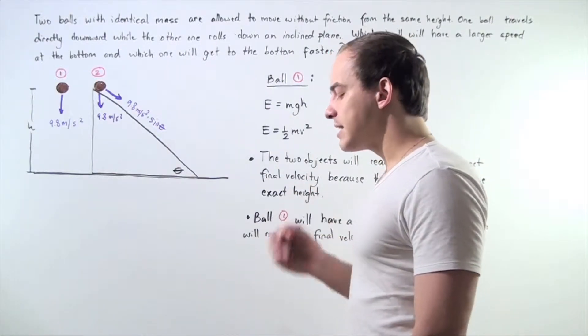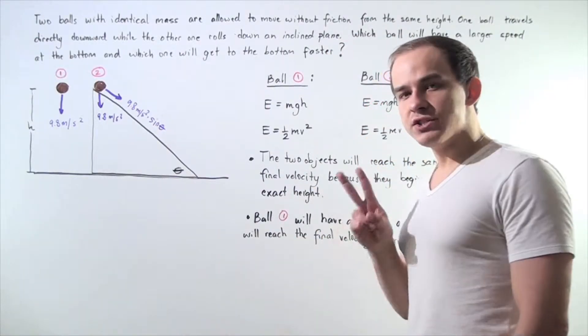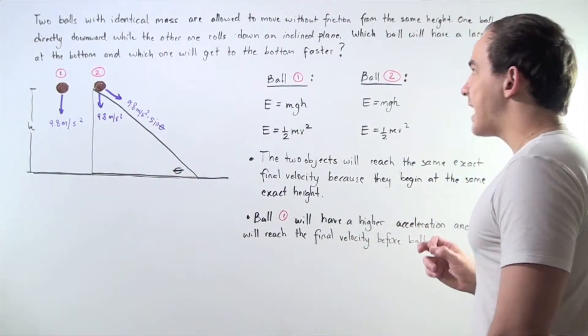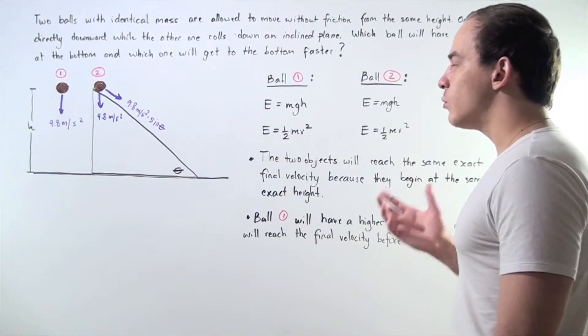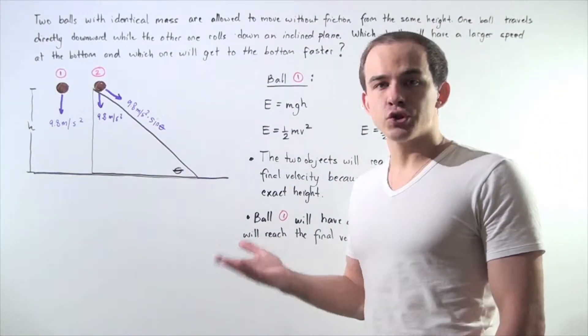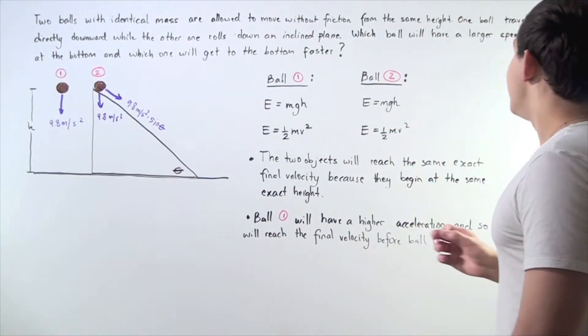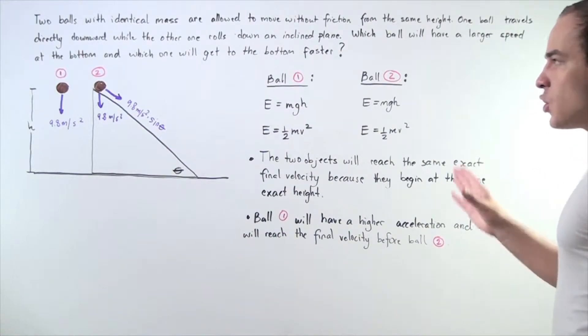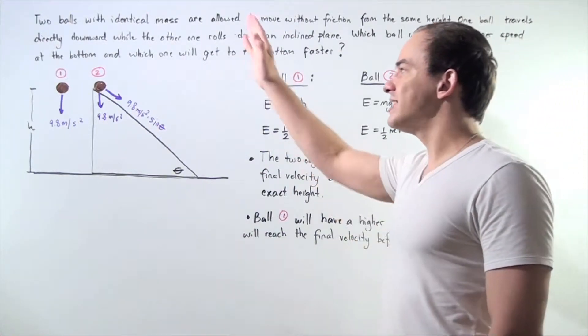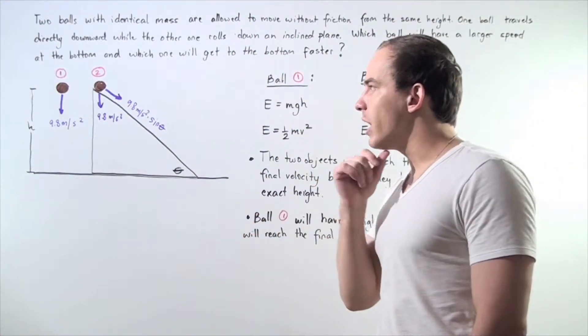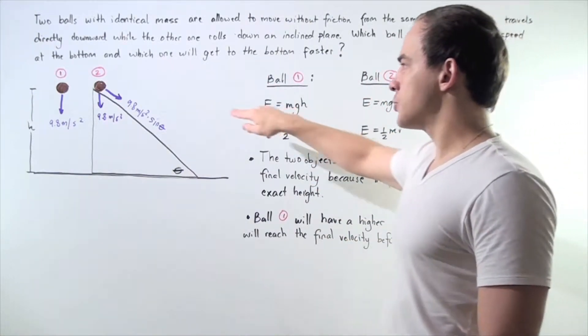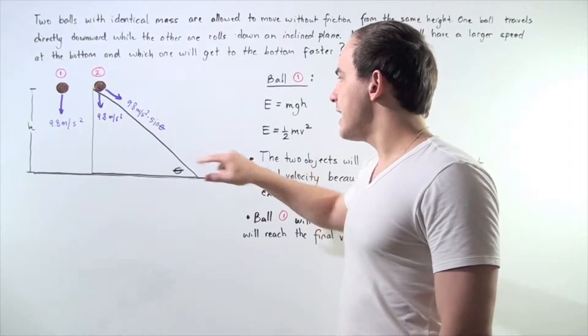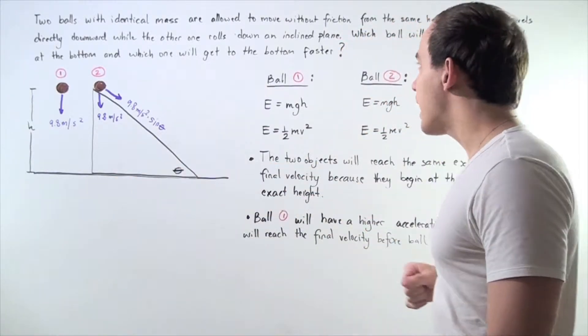Let's answer the following question conceptually. Suppose that two balls with the same exact mass begin at the same exact height and travel without friction, without any sort of drag force. One of the balls, let's call it ball number one, travels directly downward along the y-axis, while the second ball moves along the following frictionless plane that makes an angle theta with respect to the ground.